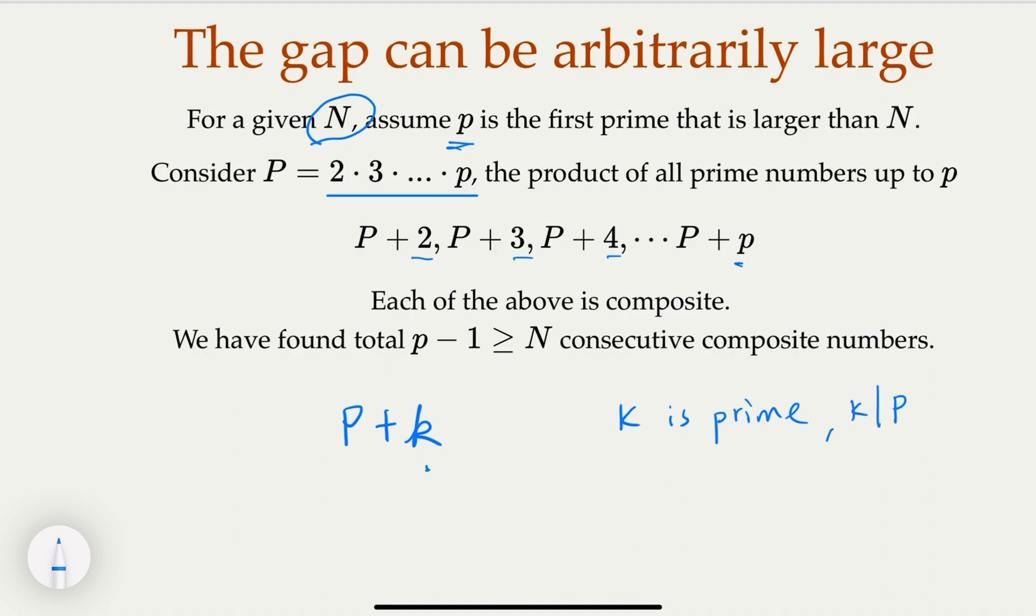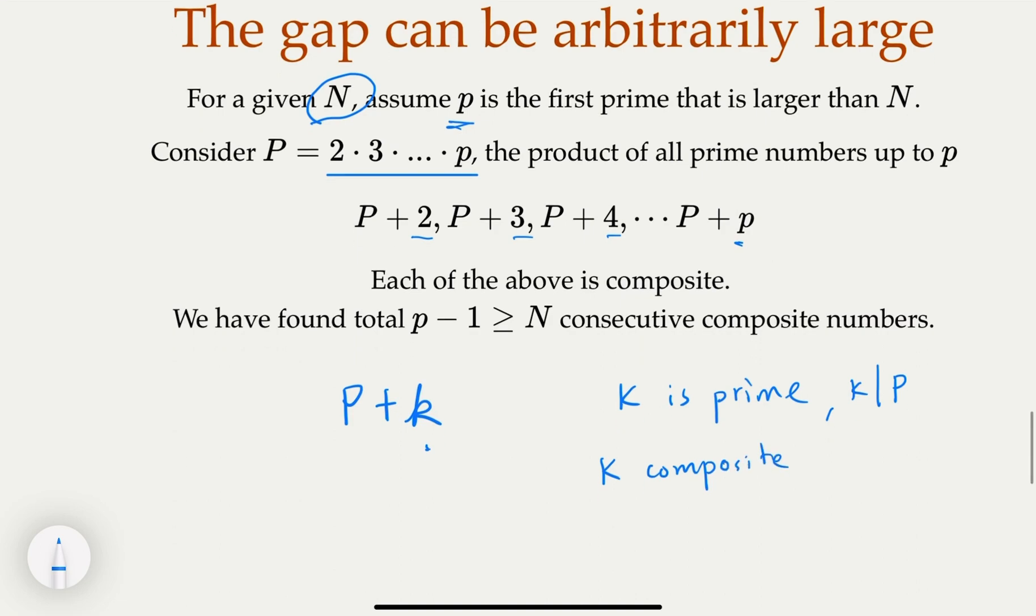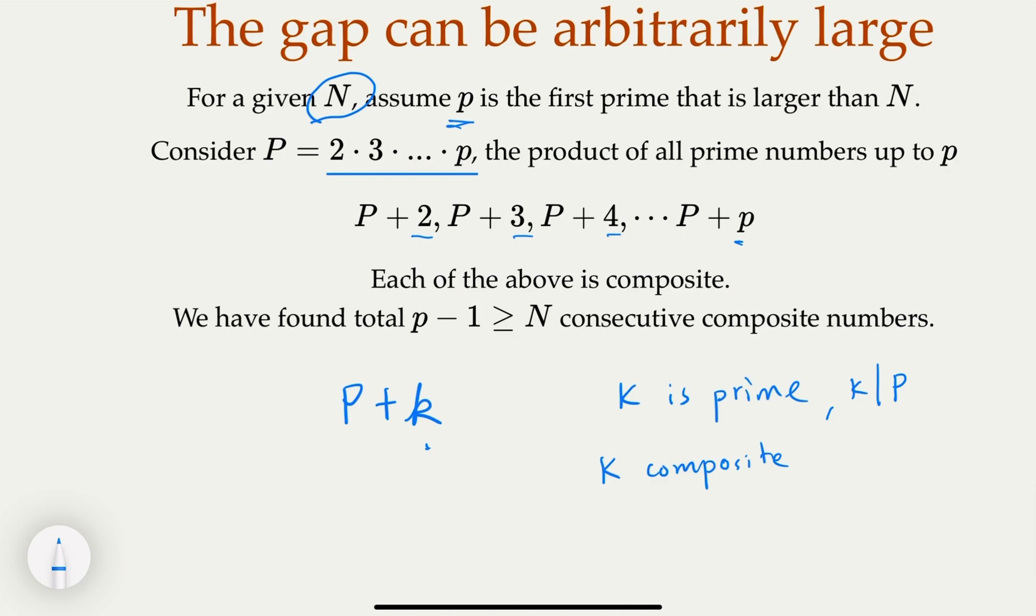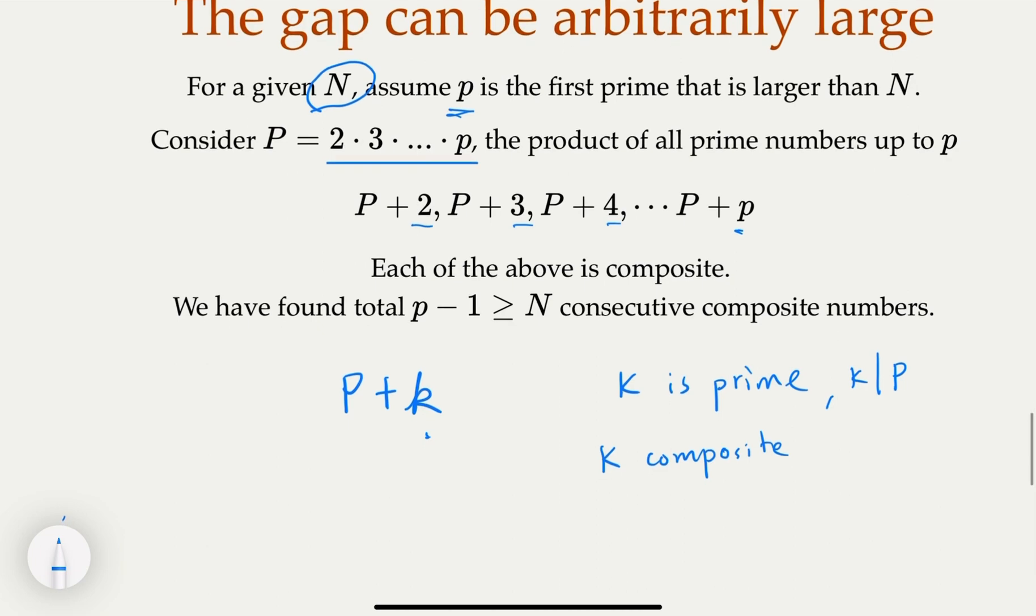Now if k is composite, notice that k is smaller than p, which means all the prime factors of k would belong to the set 2, 3, up to p.